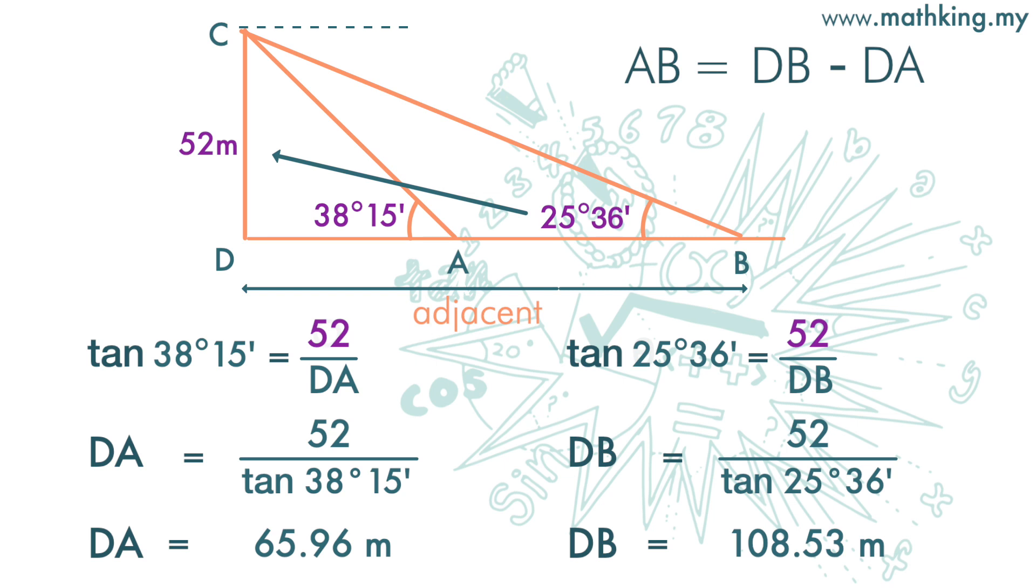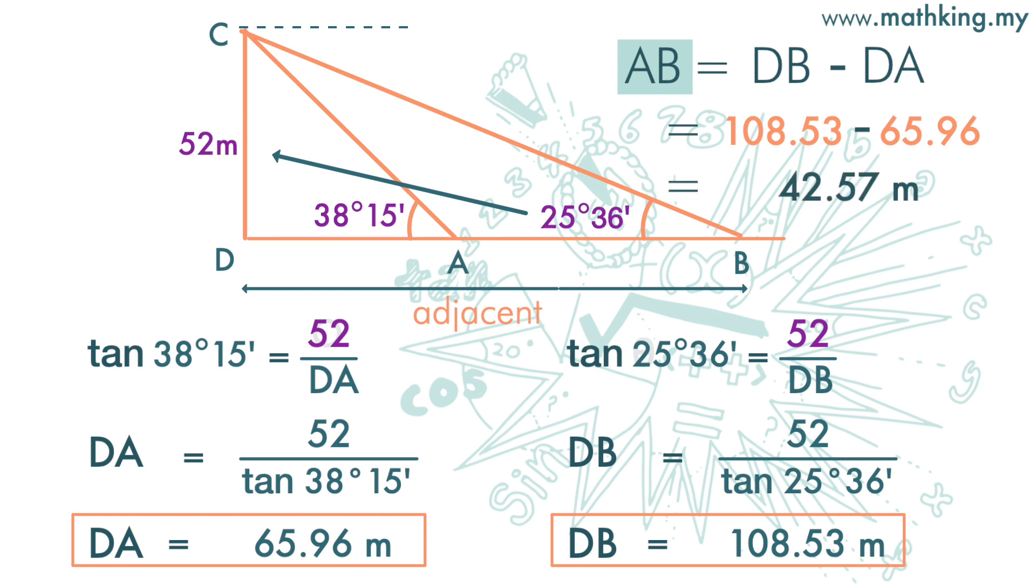Right. Now we can find the distance of AB. DB is 108.53, DA is 65.96. So AB is 42.57 meters.